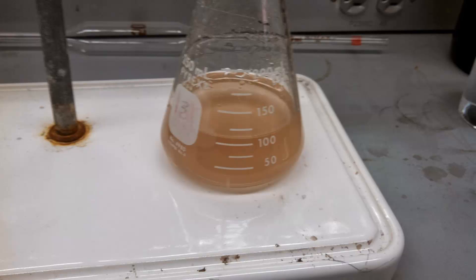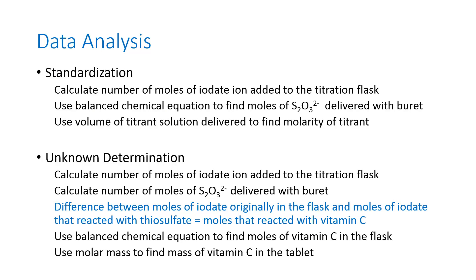So you'll do your standardization, and you'll do your unknown determination, and now we get to data analysis. For the standardization, this is a straightforward titration calculation. Calculate the number of moles of iodate ion that you pipetted into the titration flask. Use the balanced chemical equation to figure out the moles of sodium thiosulfate delivered with the burette, and then use the volume delivered to find the molarity of the titrant that you delivered with the burette.